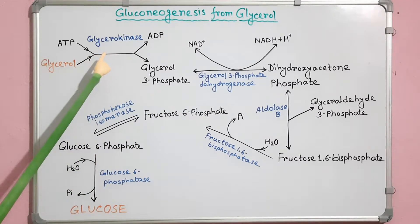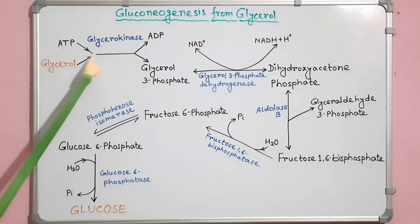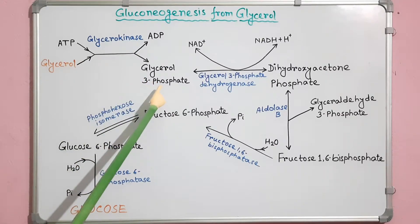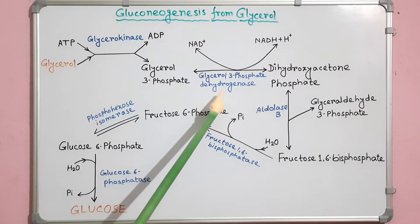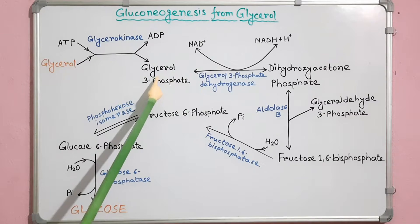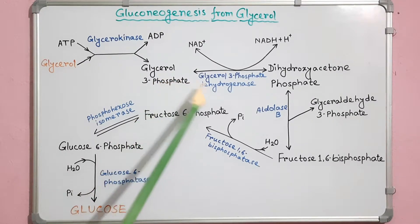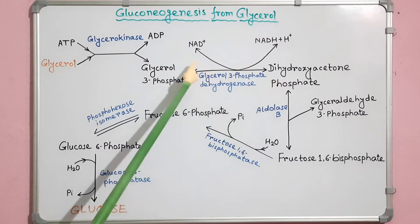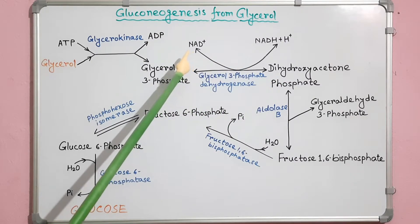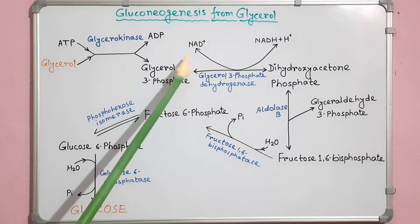Glycerokinase enzyme uses ATP and phosphorylates glycerol to glycerol-3-phosphate. Cytoplasmic enzyme glycerol-3-phosphate dehydrogenase oxidizes glycerol-3-phosphate to dihydroxyacetone phosphate. In this reaction, NAD+ acts as electron acceptor.